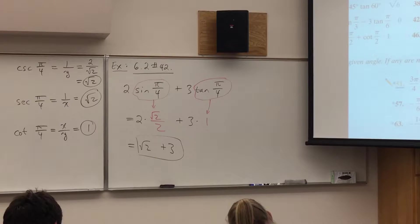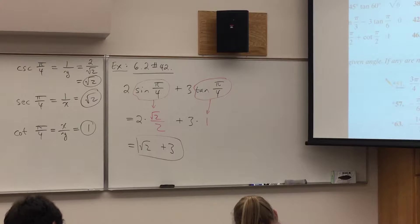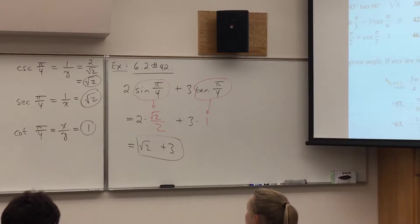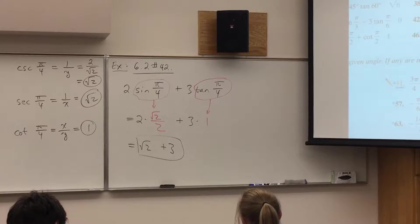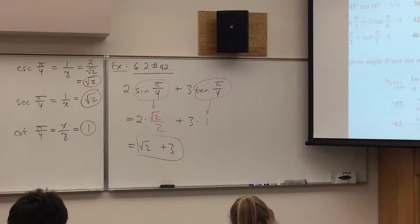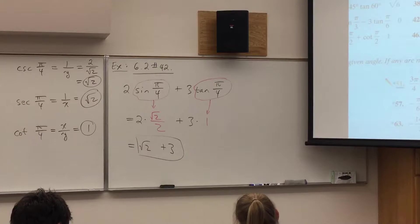Once sine and cosine of pi over 4 are memorized, the other four trig functions will follow, as will multiples of pi over 4 by using symmetry on the unit circle. Every multiple of pi over 4 is going to either be on a diagonal or be a quadrantal angle, so you can use symmetry for any multiples of pi over 4.